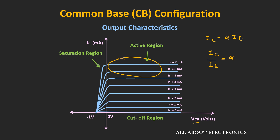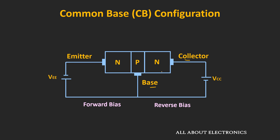The second region is the saturation region. As we reduce the value of VCB — that is, as the collector-to-base voltage goes negative — the collector current starts reducing. As the reverse bias between the collector-base junction is removed, the electrons which entered the base region from the emitter cannot cross the collector junction, reducing the collector current. Whenever both the emitter-base junction and the collector-base junction are forward biased, the BJT operates in the saturation region.